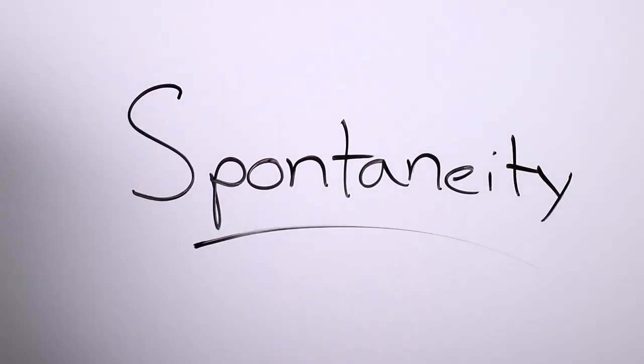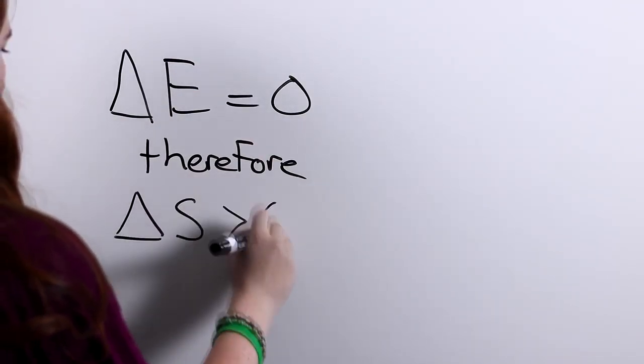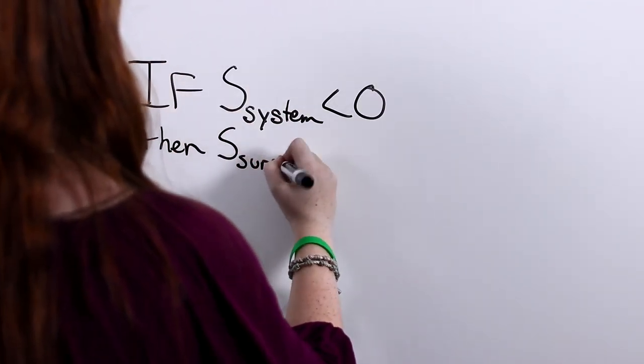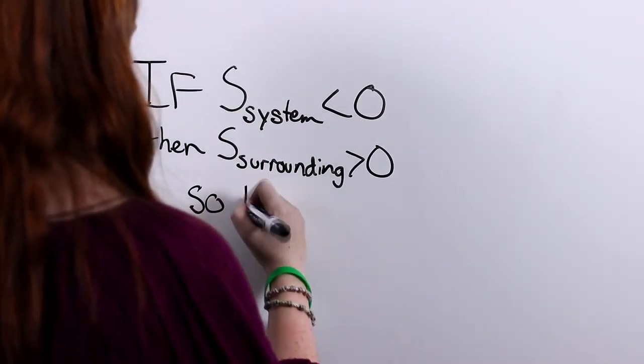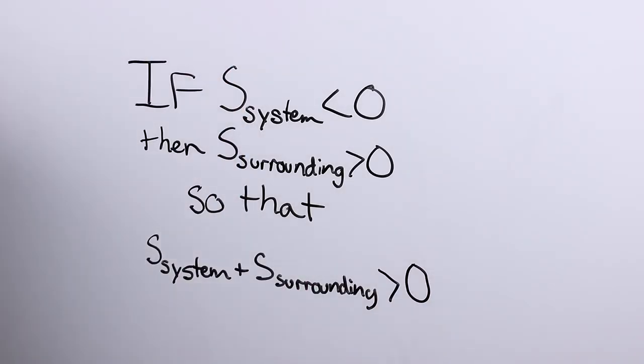A spontaneous process is a system's movement to a lower, more stable state of energy. Assuming there is no energy exchange, there must be an increase in entropy. This is supported by the second law of thermodynamics. This is not contradicted by the fact that organisms have become more ordered, because the universe has become more disordered. Although a small system's entropy is spontaneously decreasing, the larger system's entropy overall is spontaneously increasing.